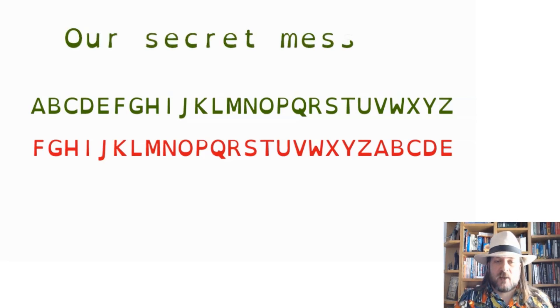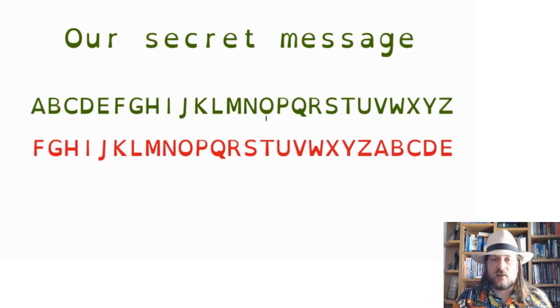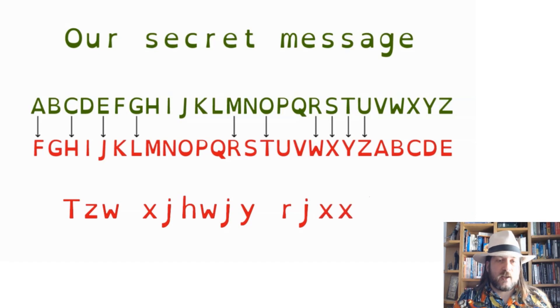Next we need our secret message, which I'll put at the top of the board — it's a simple one for now. Then we need to do the substitution: we take the first letter of our clear text message, which is O, and check which letter it matches up to below, which is T. Then we match U with Z, R with W, and so on, writing down each substitute letter until we have our secret message.